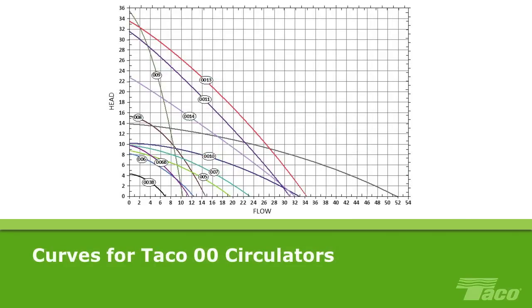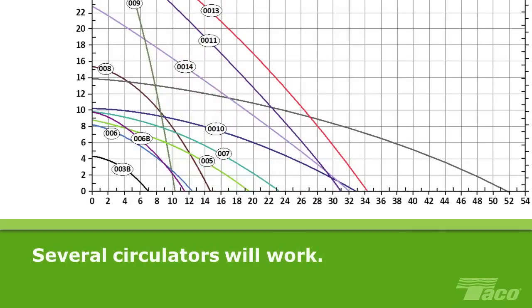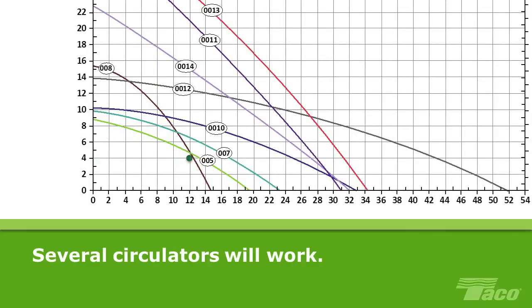Here's a graph showing the curves for the various models of Tayco 00 circulators. Using our same example of a system that requires 12 gallons per minute flow at 4 feet of head, we can see that several models of circulators will meet those requirements: the 0010, the 0011, the 0012, and the 0013 too.